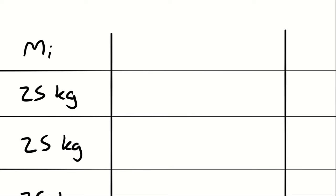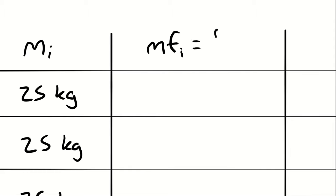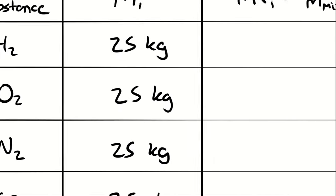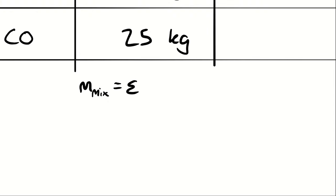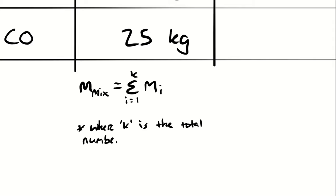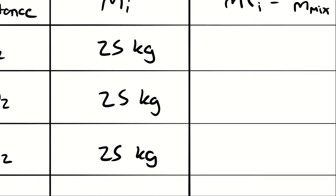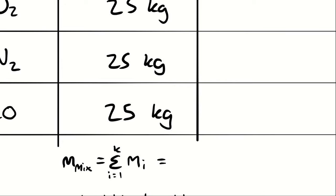The next thing is to represent the amount of mass as a proportion of the mass of the whole. That's called the mass fraction, abbreviated MF. The mass fraction is the mass of each individual species divided by the mass of the mixture. The mass of the mixture is just the sum of all the individual masses: 25 + 25 + 25 + 25 = 100 kilograms.